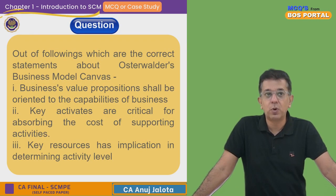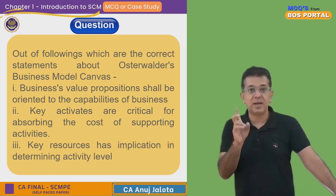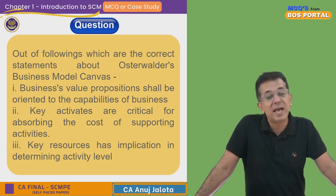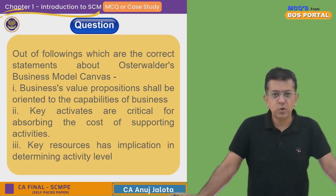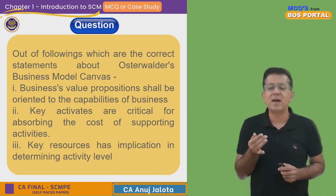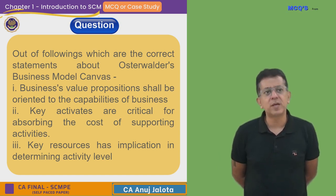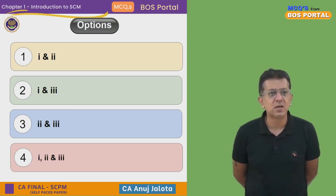So value proposition does not depend upon capabilities — it depends upon the needs of the consumer. Going back to the question: statement one says value proposition shall be oriented to capabilities of the business — that is not correct. Statement two says key activities are critical for absorbing the cost of support activities — yes, that is correct. Statement three says key resources have implication in determining activity level — suppose you have a sugar mill and want to produce 500 metric tons, but you need resources for that. If you don't have enough resources, you cannot achieve that activity level. So statement three is also correct. Statements two and three are correct, making the third option the correct answer.